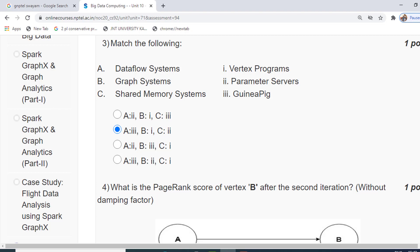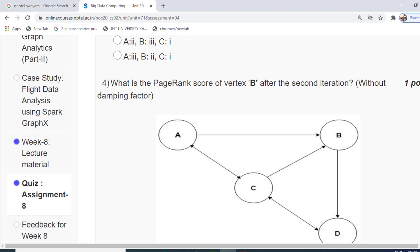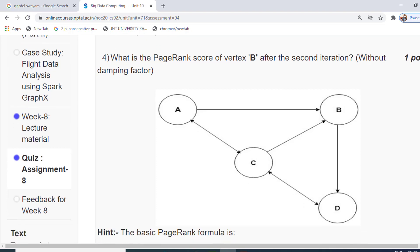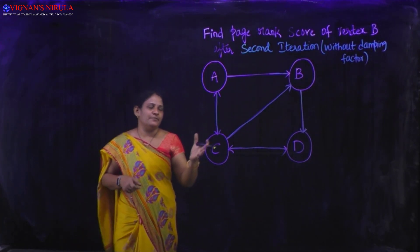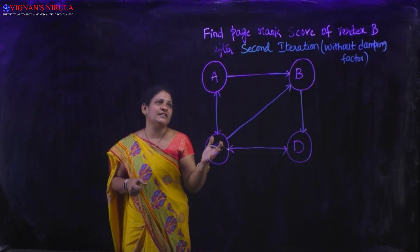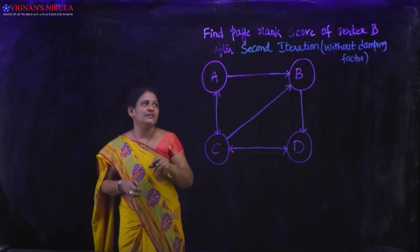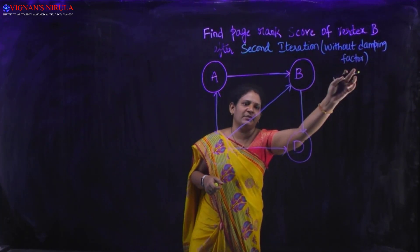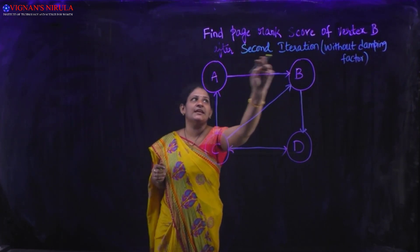The fourth question presents a graph with four nodes and asks us to find the page rank of node B (vertex B) after the second iteration, without considering the damping factor. I'll explain the procedure for solving this problem. The graph has four nodes and we need to find the page rank of vertex B after the second iteration, with the damping factor eliminated.